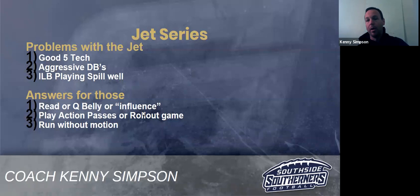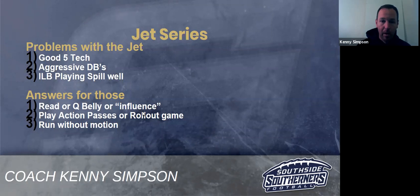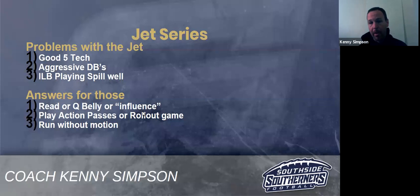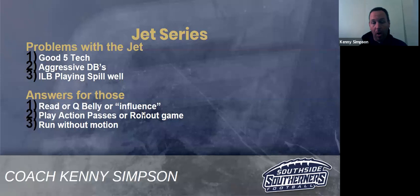We're also going to run QB belly a lot in that look because there's a natural bubble in the defense in the B gap. We're going to run belly read this year as one of the answers, or we're going to influence that kid — see how he reads things, whether he's an upfield player or if he's reading your tackle's block. Aggressive DBs can be a big problem with jet. When that safety comes shooting down and you can't get a block, that's a problem. Our answers are generally in the passing game.